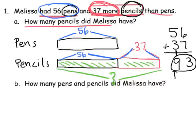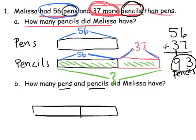So, Melissa has 93 pencils. And then the question is, how many pens and pencils does she have? So, the tape diagram for that might look like this. Now, there's no magic way to draw the proper tape diagram. So, if you're doing it differently than I am, that's all right, as long as you're understanding the problem and as long as you're getting the right answer.